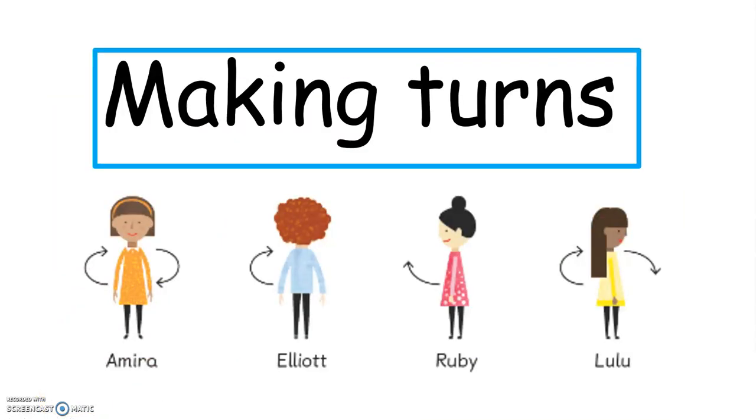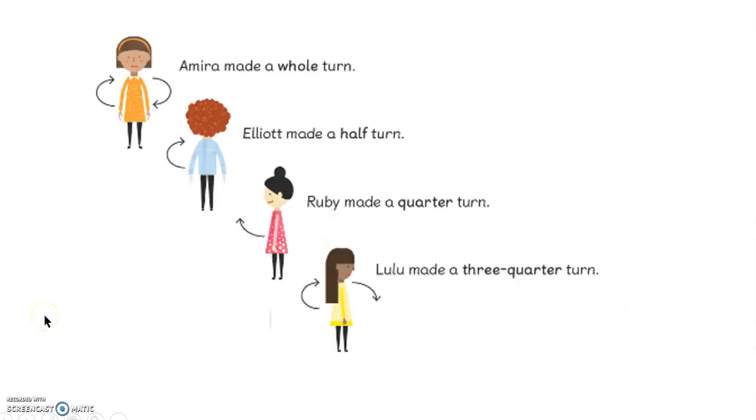They would be looking at making turns and describing them. For example, Amira made a whole turn, Elliot made a half turn, Ruby made a quarter turn, and Lulu made a three-quarter turn.